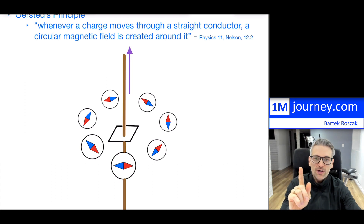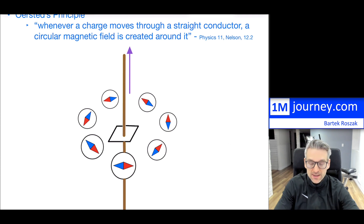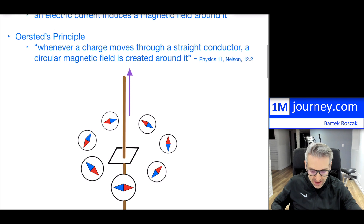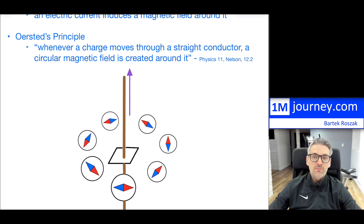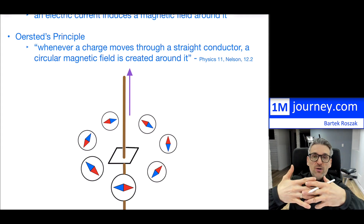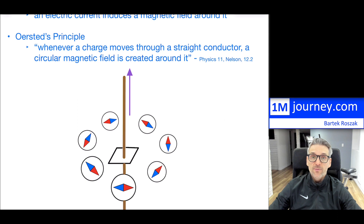The magnetic field is basically circular all the way around as you go through the wire. Oersted's principle states — and I'll put references below from Nelson's Physics 11 — that whenever a charge moves through a straight conductor, a circular magnetic field is created around it. That's the interconnection of electricity and magnetism: when you have electrons flowing through, you will be creating a magnetic field around it.